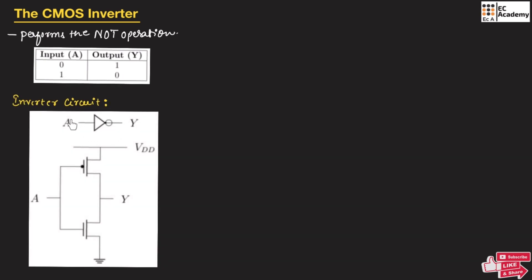This is the symbol of the CMOS inverter and this is the CMOS inverter circuit. The required NOT operation is performed using this circuit. This is the logic symbol and this is the transistor-level implementation. A triangle with a circle represents the NOT gate or an inverter.